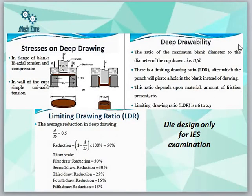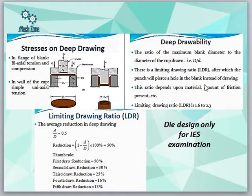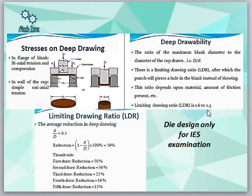Deep drawability is the ratio of maximum blank diameter to the diameter of the cup drawn — that is capital D (blank diameter) to small d (cup diameter). There is a limiting draw ratio, which depends upon the material and the amount of friction present. This limiting draw ratio is generally between 1.6 and 2.3.